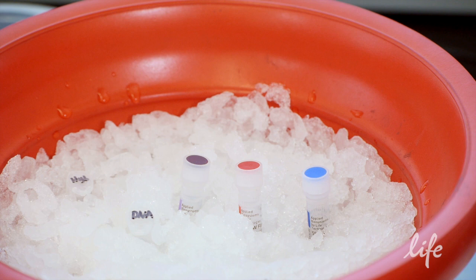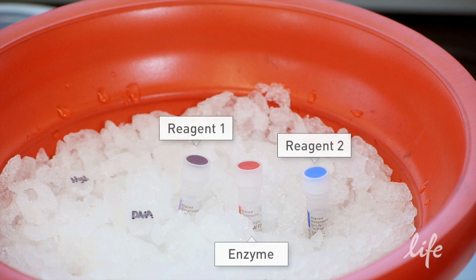The 5500 Wildfire Flowchip Prep Enzyme Kit contains reagent 1, reagent 2, and enzyme. You will also need your library at this time.